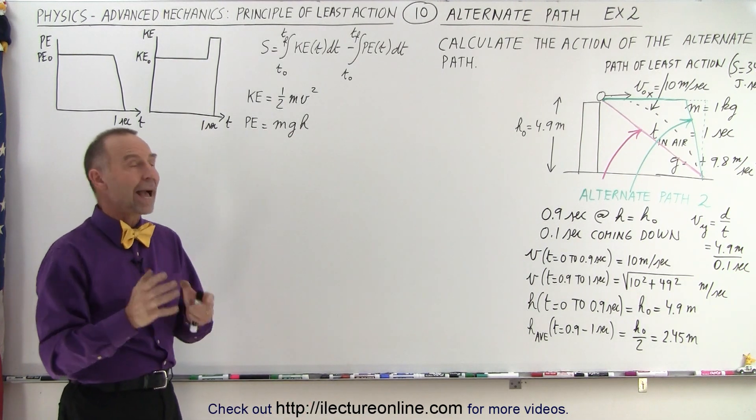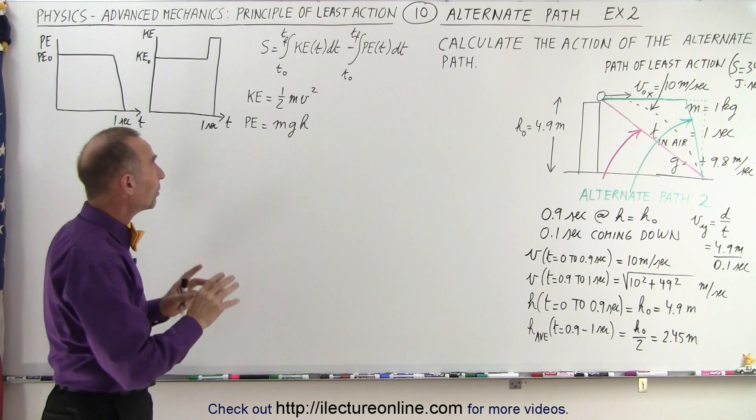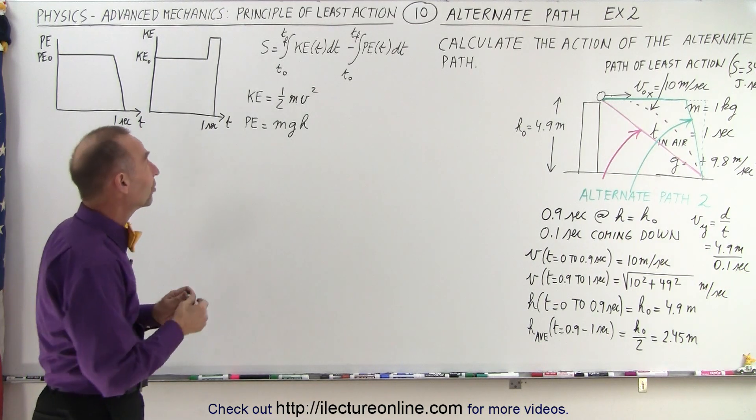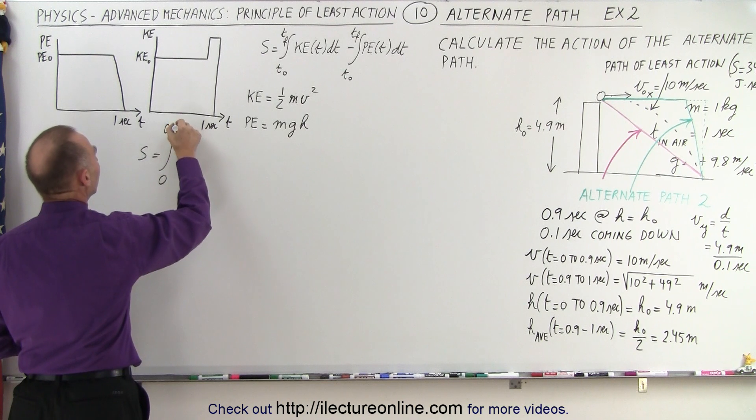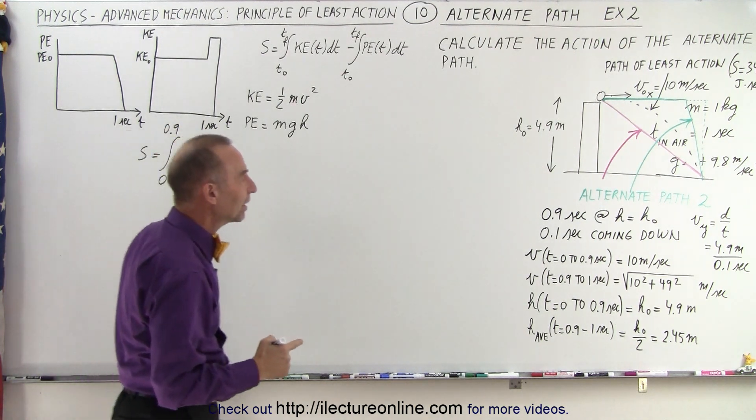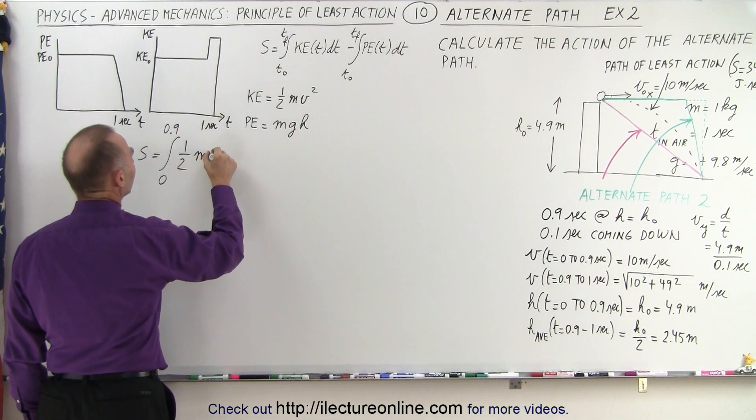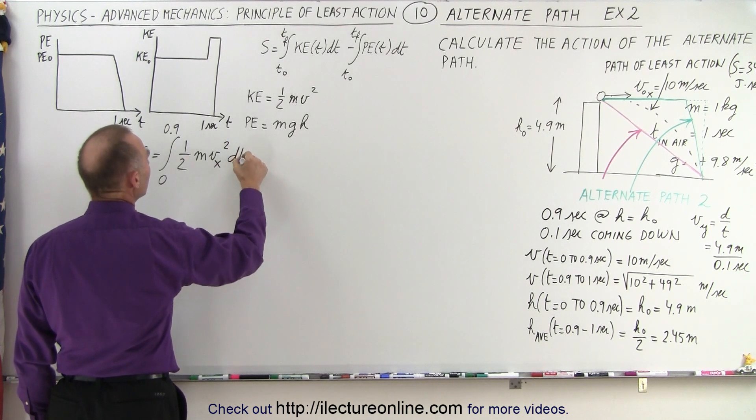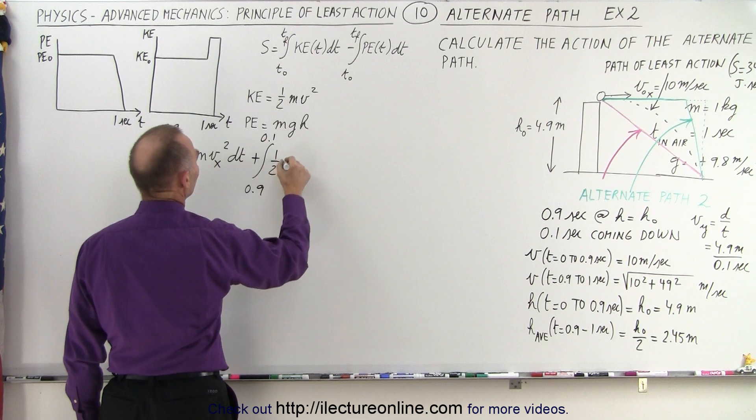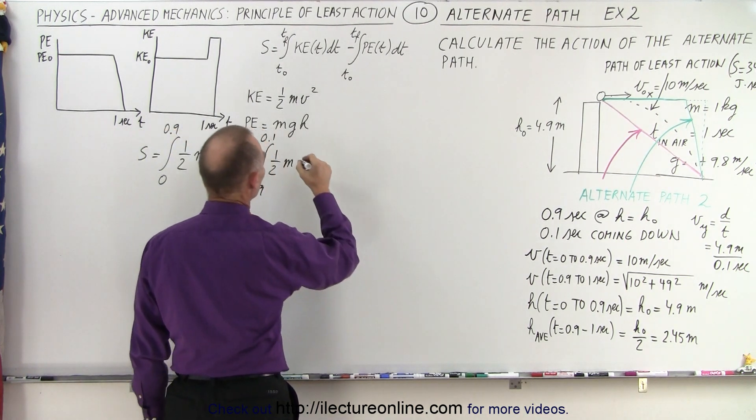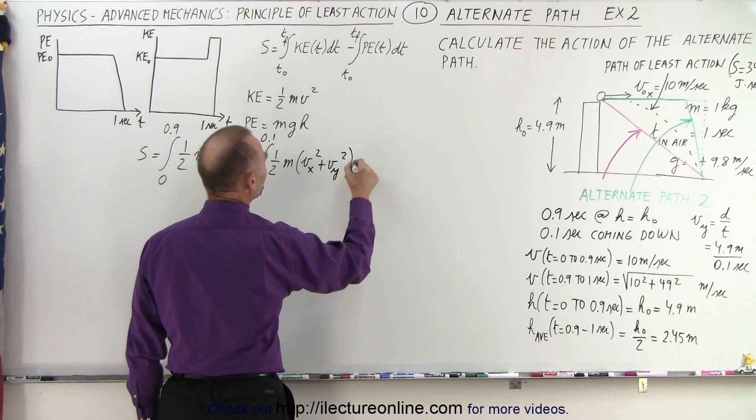All right, let's calculate now the action. We're not going to write down the equations. We'll make it up as we go because there's mostly constant values, and we'll have to integrate twice, once from 0 to 0.9 and once from 0.9 to 1 second. So the action is going to be first the kinetic energy, so the integral from 0 to 0.9 of the kinetic energy times dt, and the kinetic energy comes from this constant velocity, so it'll be one half times the mass times v sub x squared times dt, plus the integral from 0.9 to 1 of one half the mass times the velocity, which will now be the velocity in the x direction squared plus the velocity in the y direction squared, both constants times dt.